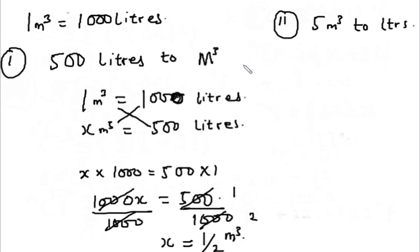Okay, so simply as we did before, we'll be using the conversion factor. So we have one meter cube is equal to one thousand liters. Okay, so five meter cube should be equal to, we do not know the equivalent value in liters, so we'll be representing it as x liters.